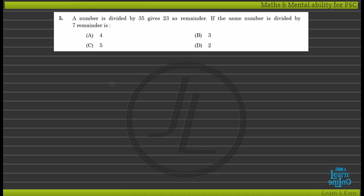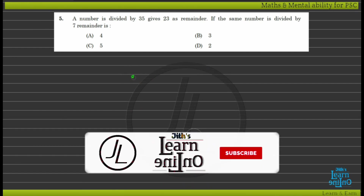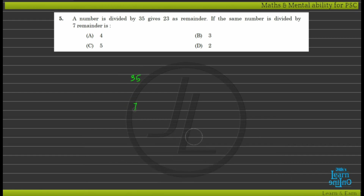The number gives 23 when divided by 35. The number divided by 7: since 35 is a multiple of 7, we check 23 divided by 7. We get 3, 7, 21, and 2, so the remainder is 2.